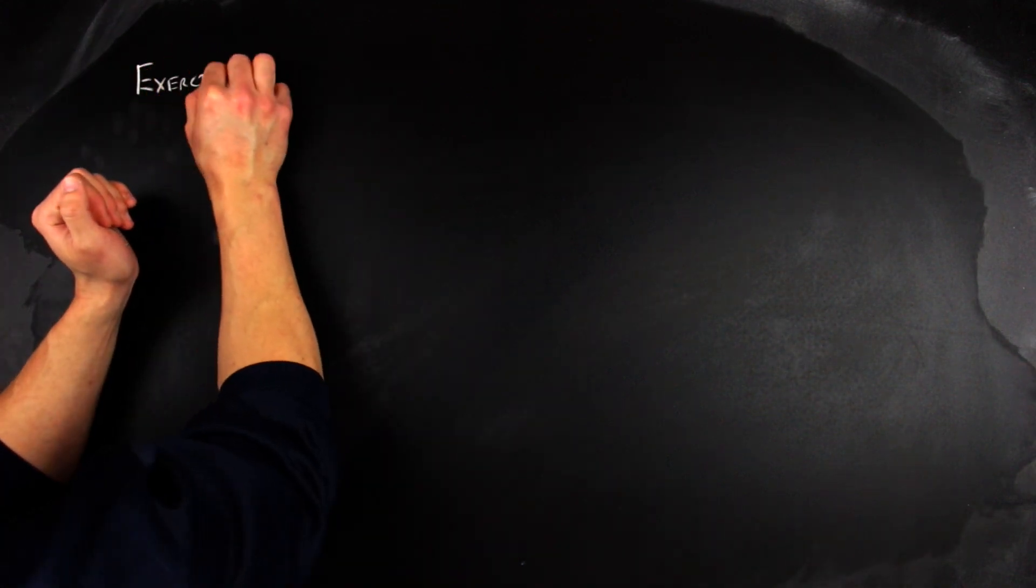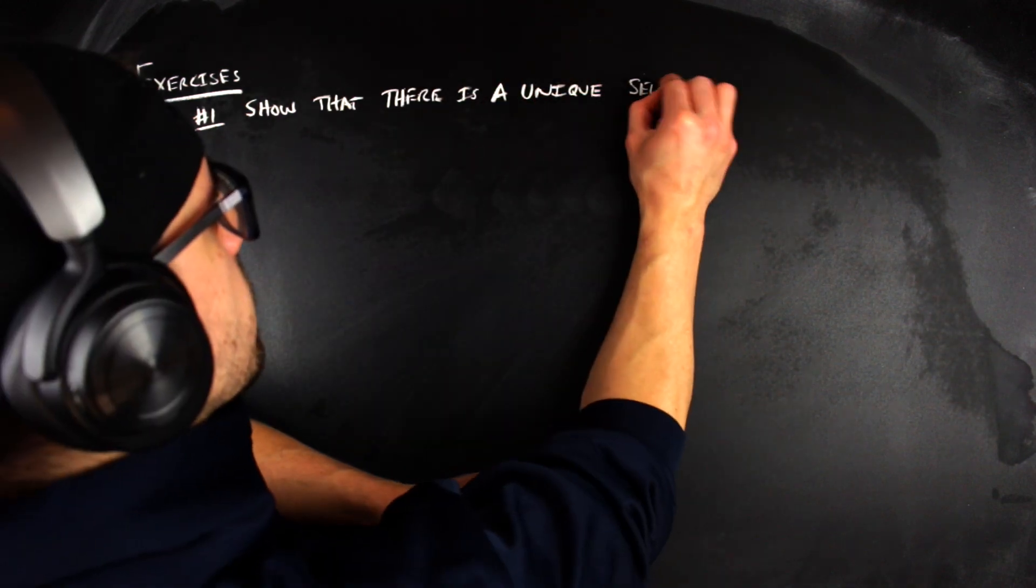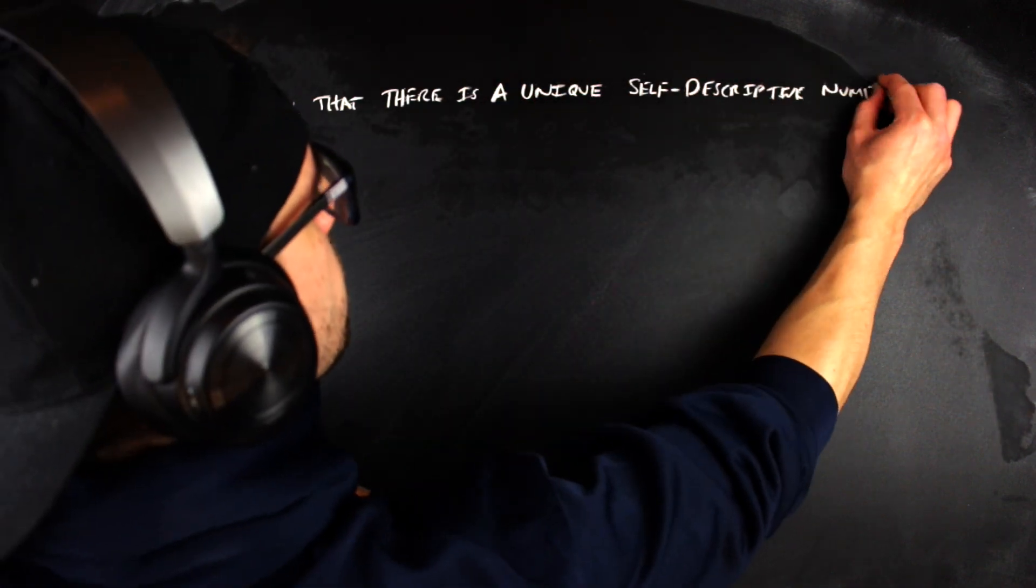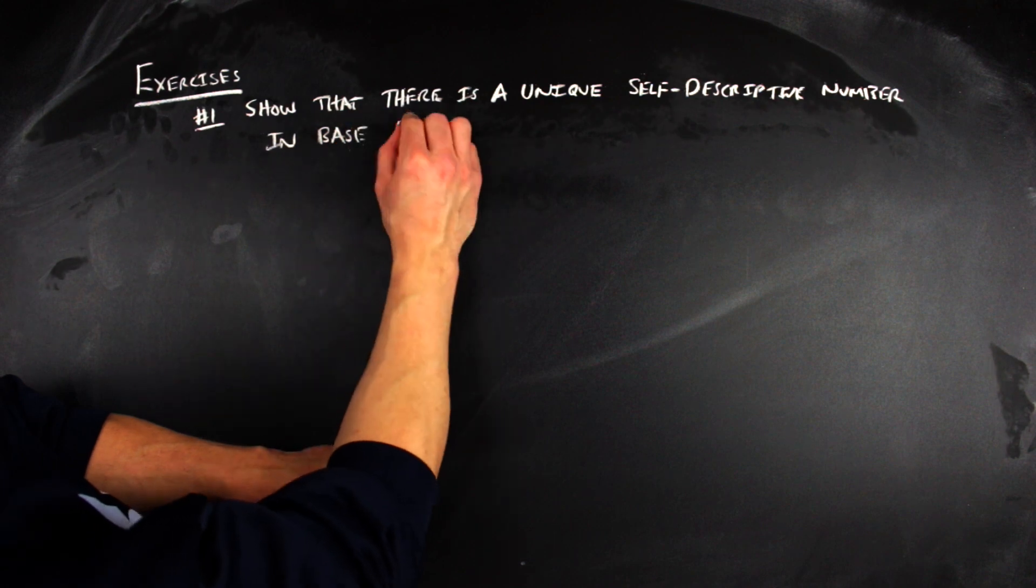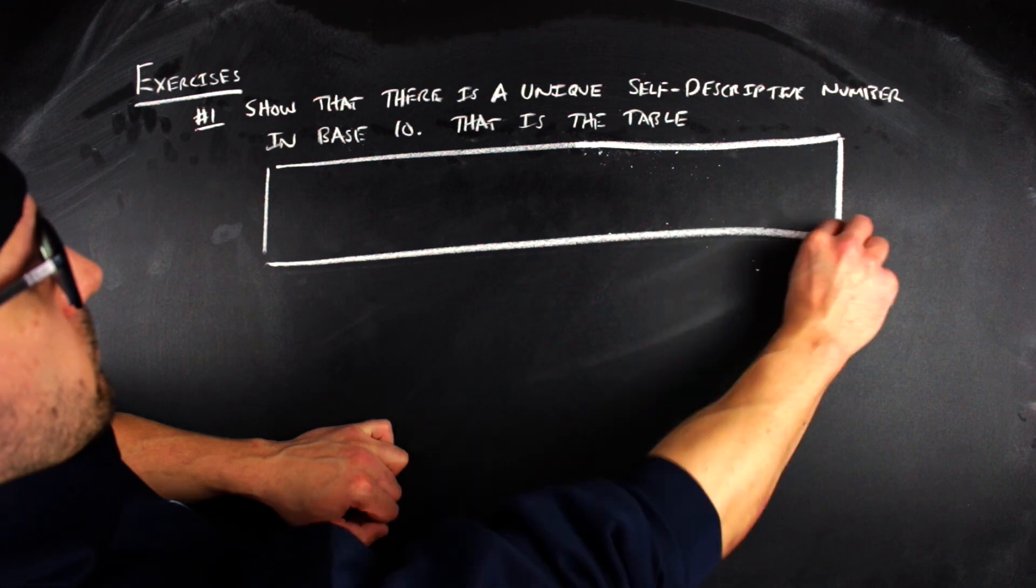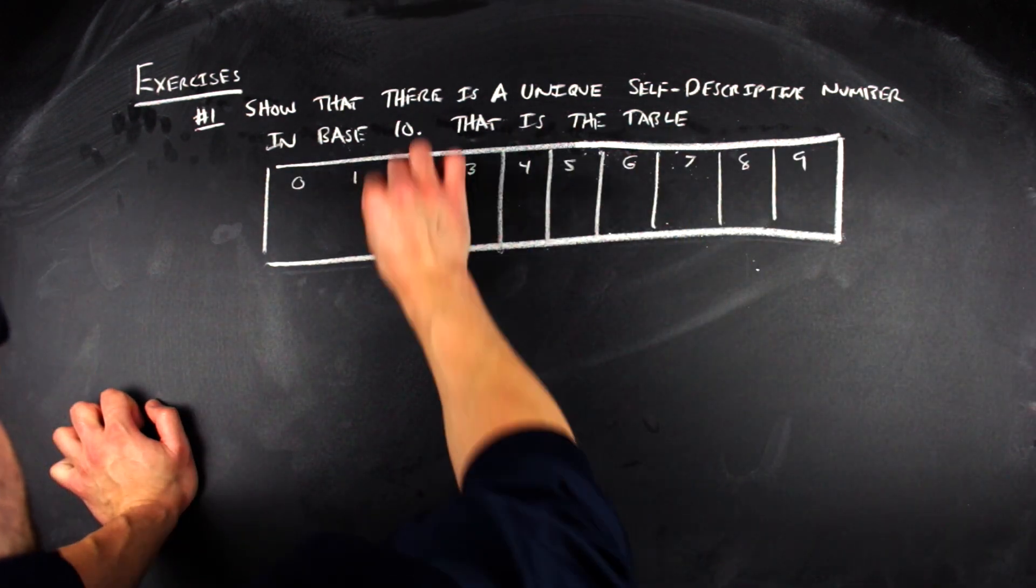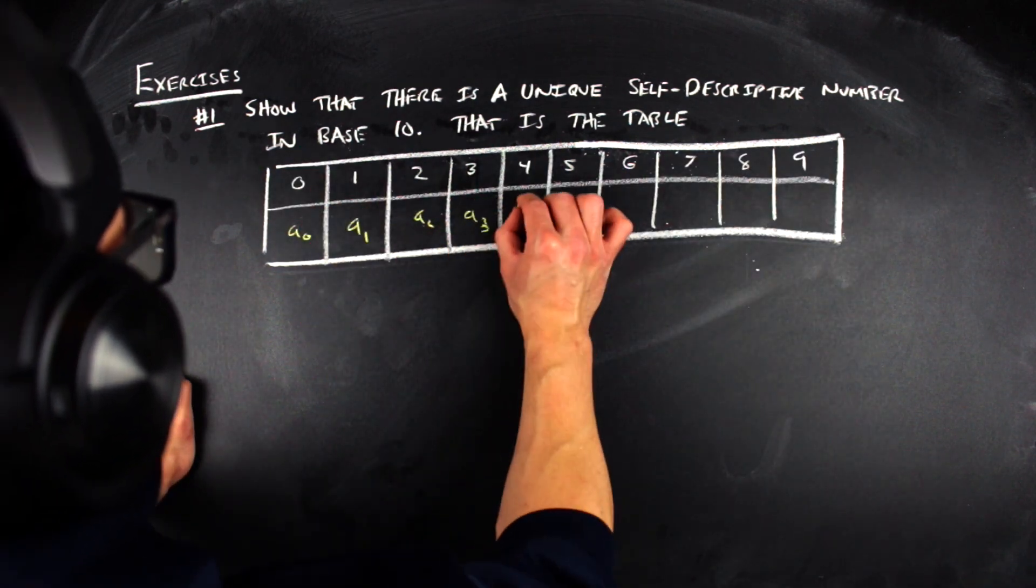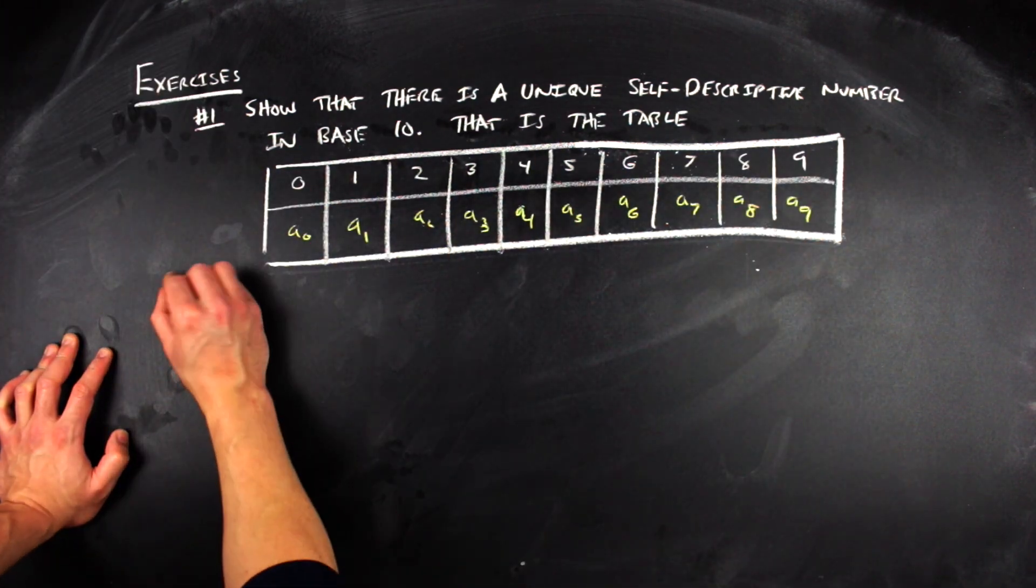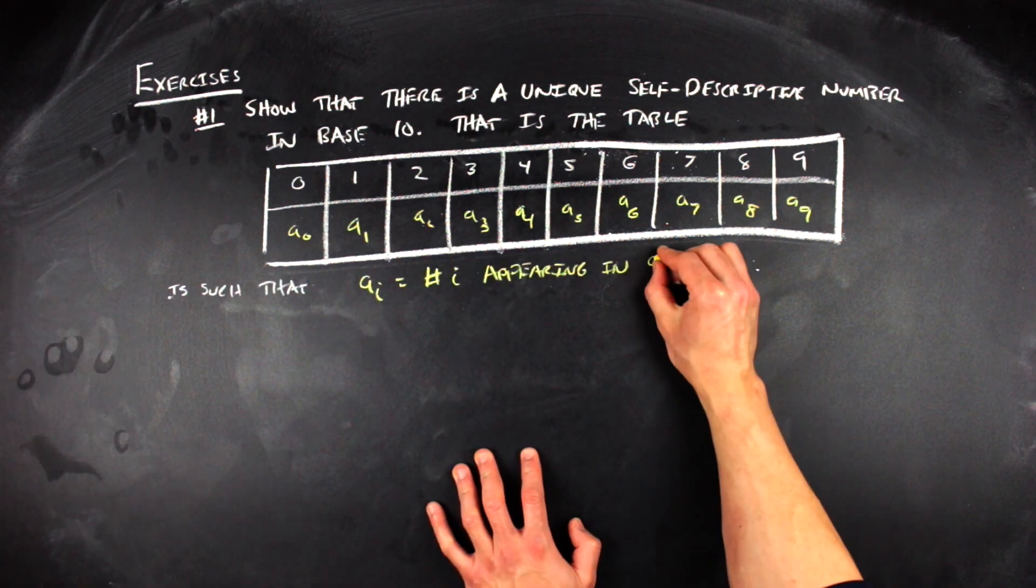So the first question is just show that there is a unique self-descriptive number in base 10, which means that the table with a row of 0, 1, 2, 3, 4, 5, 6, 7, 8, 9, and it being filled in by A0, A1, A2, A3, all the way up to A9, reports the number of corresponding digits in the number. So A0 will tell you how many zeros are in the number, and A1 will tell me how many ones are in the number, and A2 will tell you how many twos are in the number, and A3 will tell you how many threes are in the number, and so forth, all the way up to A9, which will tell you how many nines are in the number.